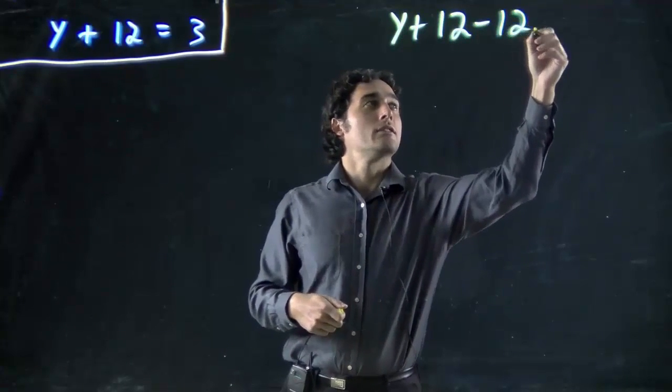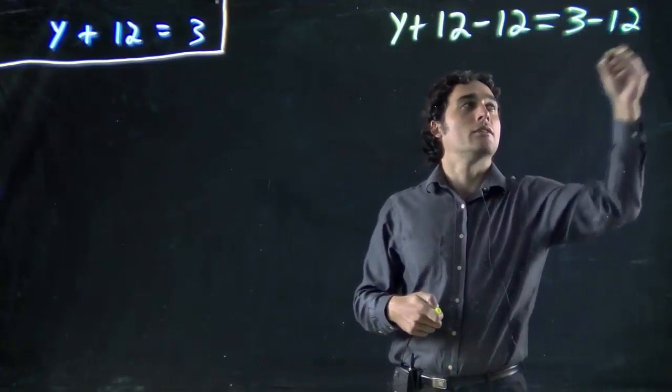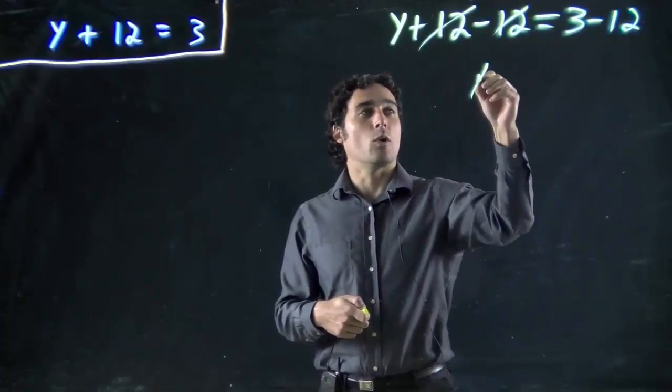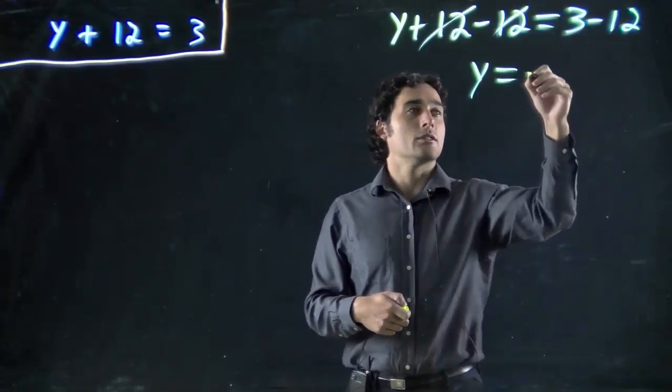So, minus 12, and we're doing the same on the other side. Minus 12. And these are going to cancel out. So all we're left with is y on the one side. And then we have to do 3 minus 12, which is minus 9.